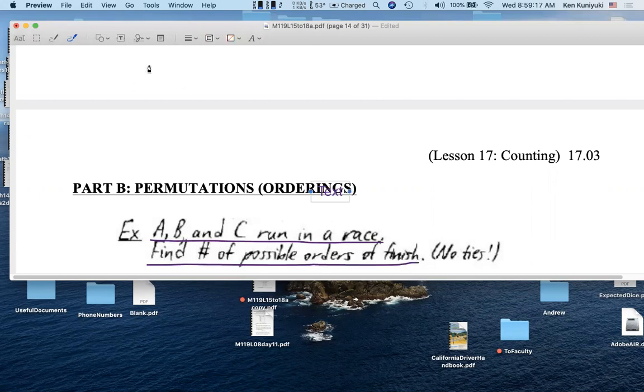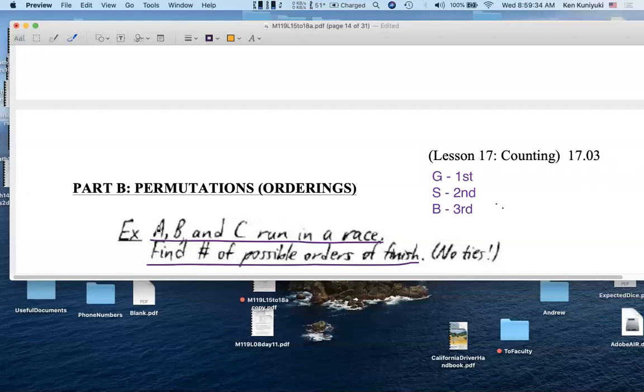So, in particular, how many ways are there for fate to assign a gold medal, that is for first place, a silver medal, that is for second place, and a bronze medal, that is for third place? How many ways can fate assign these medals to the three runners?